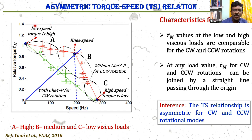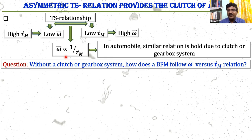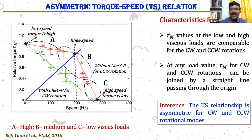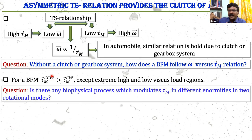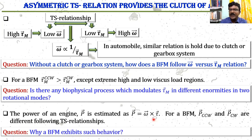At low speed, torque is high; however at high speed, torque is low — a relation also observed in the automobile system, regulated by the gearbox mechanism. Without a clutch or gearbox system, how does the BFM follow this relation? Also, the torque for CCW rotation is higher than for CW rotation. Some biophysical process is modulating this torque τM. The power for CCW rotation is also higher than for CW rotation. Why does the BFM exhibit such behavior?